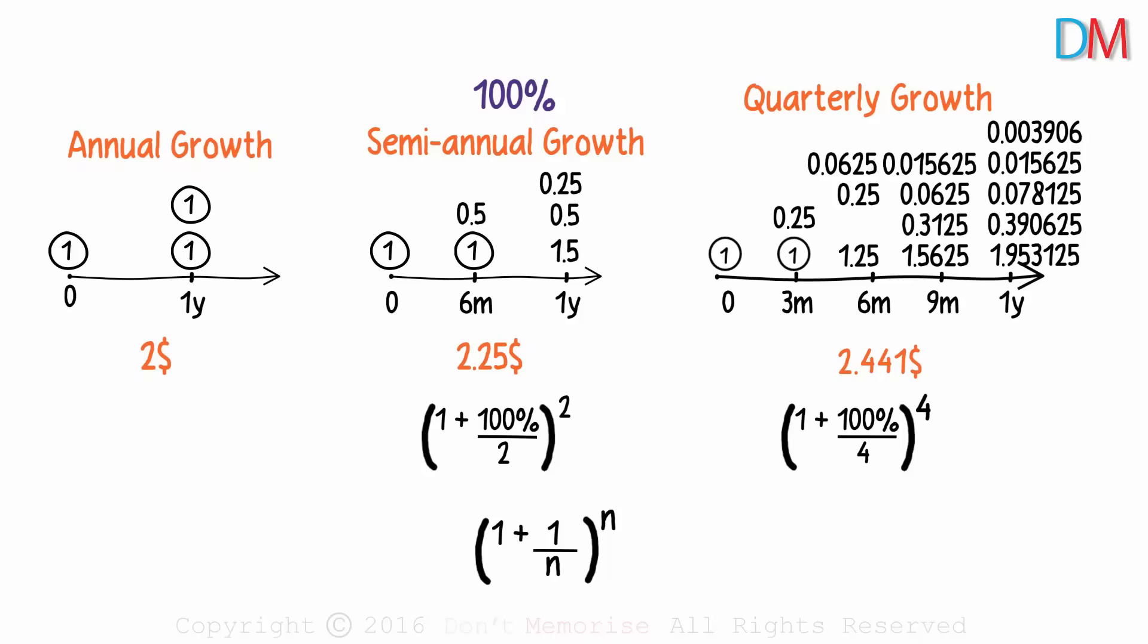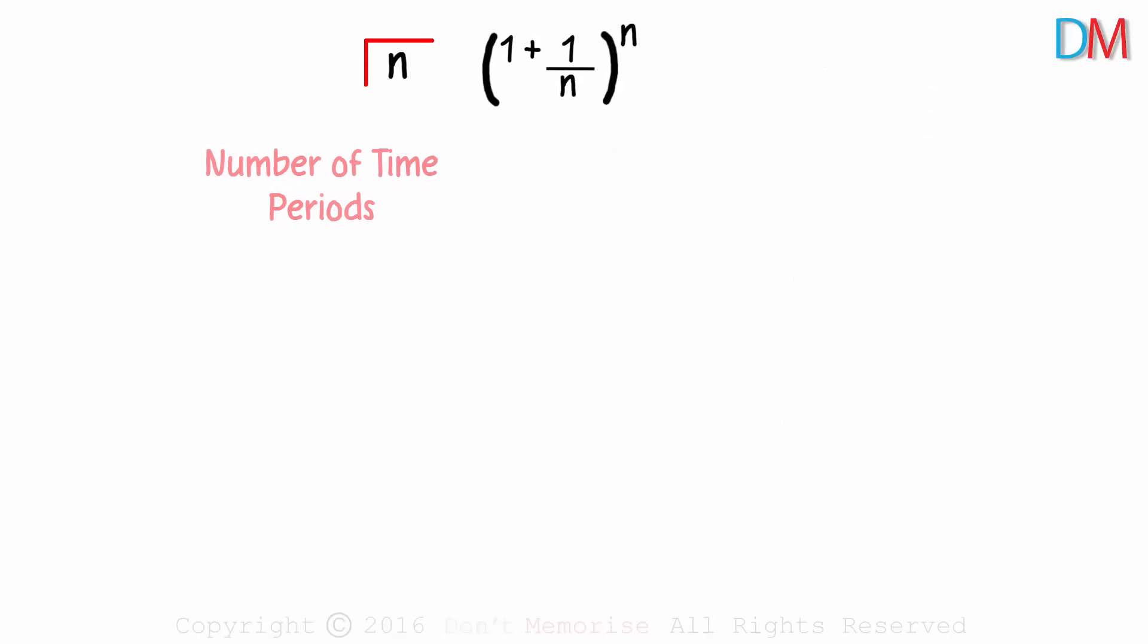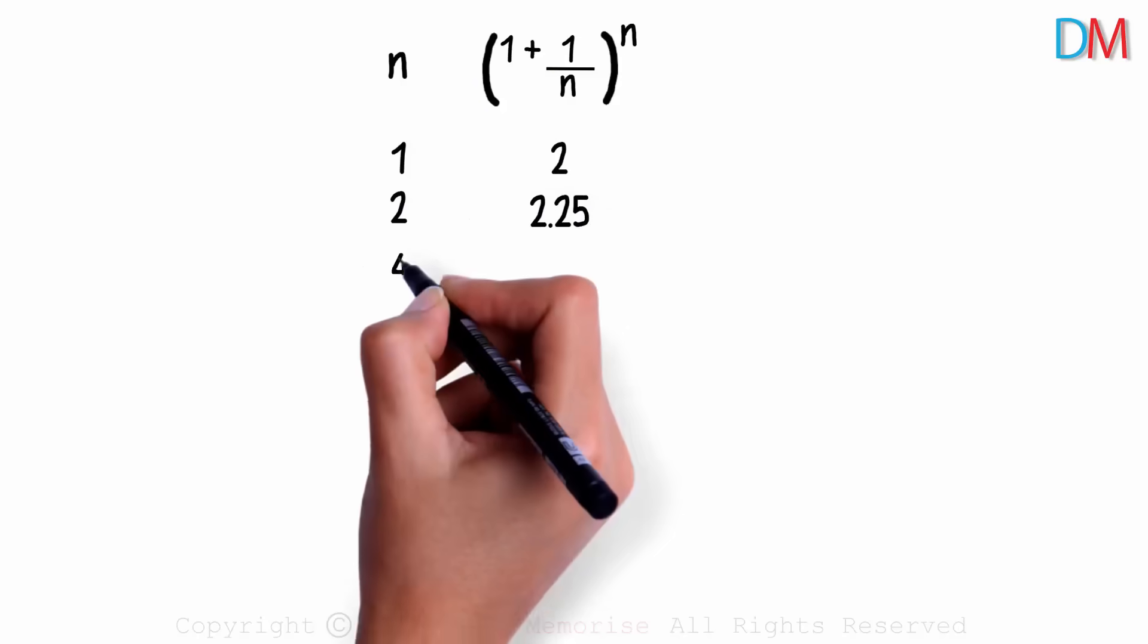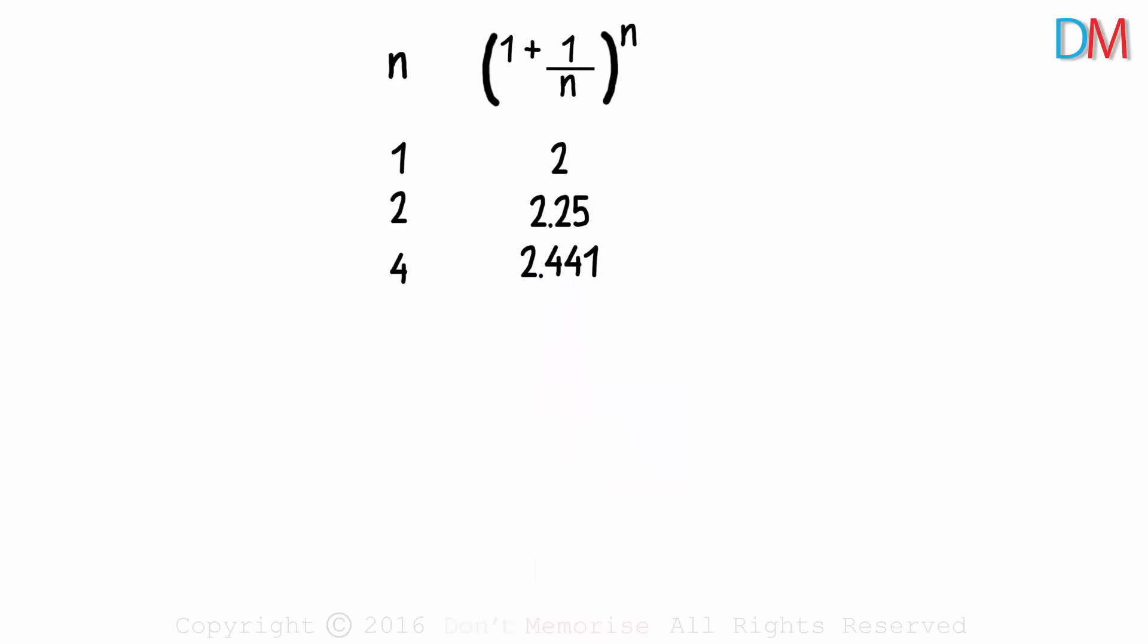I probably know what your greedy brain is thinking. Is it possible to get unlimited money? Let's make a table now. Number of time periods and the dollar value in the end. If it's just one time period, the dollar value is two. If two time periods, then two dollars twenty-five cents. If four time periods, then two dollars and forty-four cents. If I divide the year into twelve equal time periods, my return will be higher than this. If I divide it into three hundred and sixty-five equal time periods, it will be even higher. This tells us that a dollar at the start of the year will become these many dollars at the end of one year, if the number of time periods is three hundred and sixty-five. So if we increase this number significantly, that is if we increase the number of time periods significantly, will this number also increase significantly?